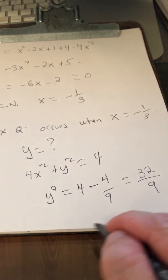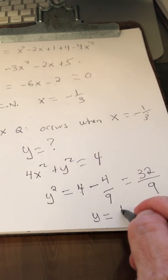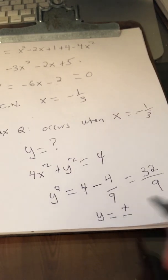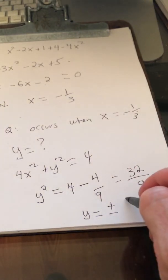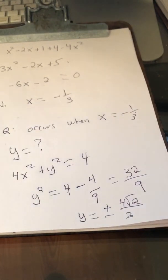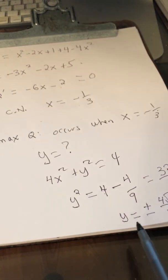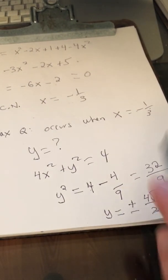So solving for y, what do we get? y equals plus or minus. The square root of 32 can be simplified because 32 is 16 times 2. So what we get is plus or minus 4 times the square root of 2 over 3. So as expected, we're getting two different y values, one positive, one negative.